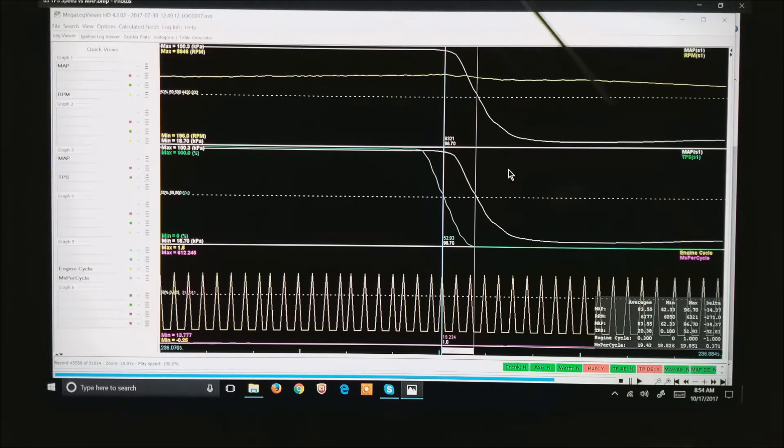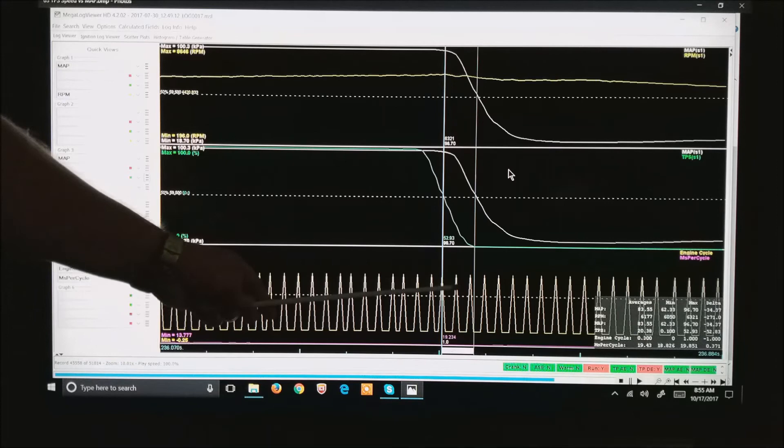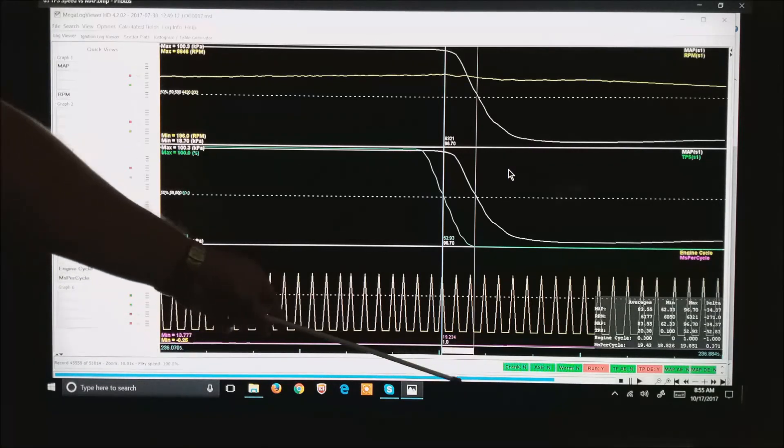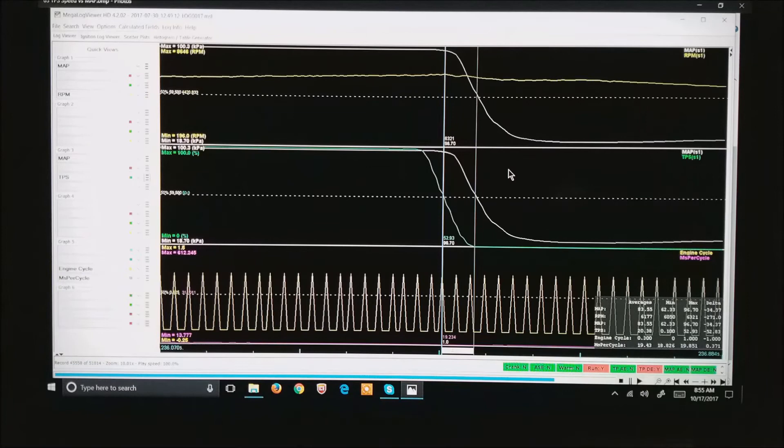Notice that the manifold air pressure is slightly delayed to the throttle position. At the bottom, what we're looking at is these are engine cycles. It is about two engine cycles behind the TPS that the map notices that you've gotten out of the throttle. If you look at the bottom, that happens to be, you might not be able to see it, but that's only 45 thousandths of a second.